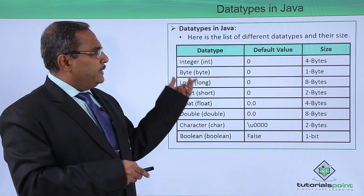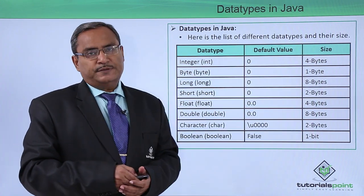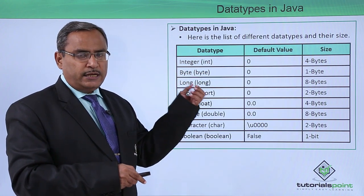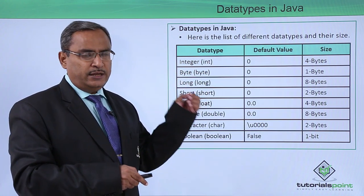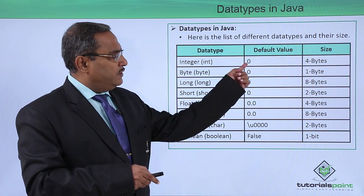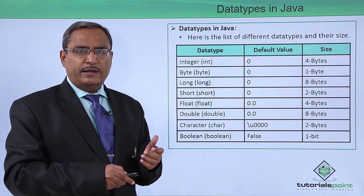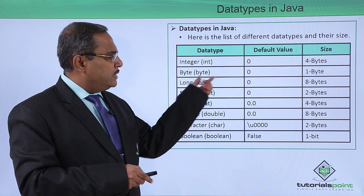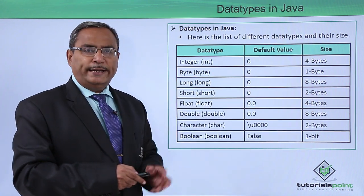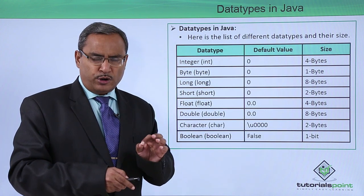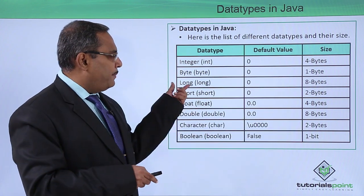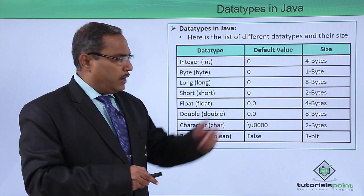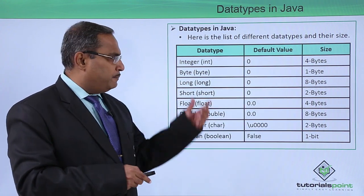Here is the list of different data types and their respective sizes. Integer, written as 'int' in lower case in Java code, has a default value of zero and a size of four bytes. Byte is written as 'byte', has a default value of zero, and occupies one byte — that is eight bits — of memory. Long, written as 'long', has a default value of zero and occupies eight bytes.